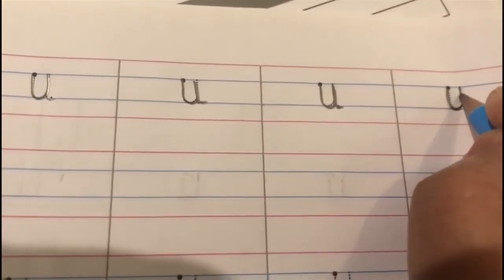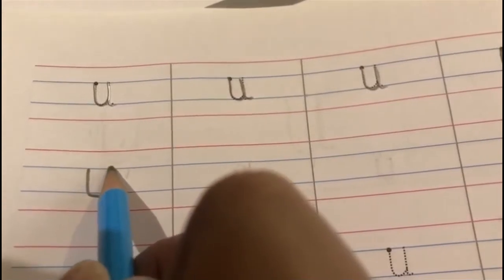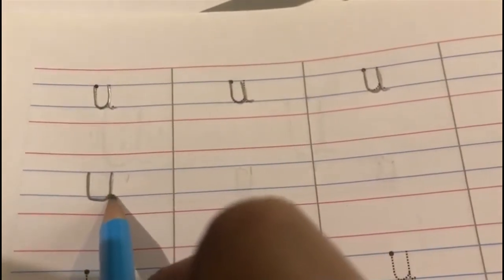After we trace letter u, we are going to write letter u independently. Come on. Let's begin. Start from the first blue line. Go down to the second blue line. Take a lumpity. Go up. Again, come down. Make a tail.